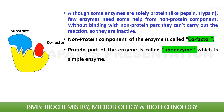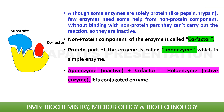The protein part of the enzyme is called the apoenzyme, which is a simple enzyme. Apoenzyme plus co-factor is called the holoenzyme. Only the enzyme's apoenzyme and co-factor together are called the holoenzyme — not the substrate. It is a conjugated enzyme.